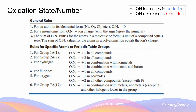We've just gone through the general rules one, two, and three. But there are rules for specific atoms or periodic table groups. For group one, the oxidation number is going to be equal to +1 in all compounds, and for group two, they're going to be +2 in all compounds. For fluorine, the oxidation number is equal to −1 in all compounds. However, there are exceptions for hydrogen, for oxygen, and for group seven halides.